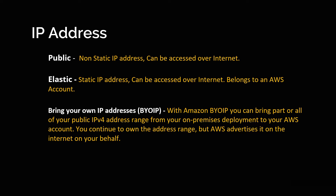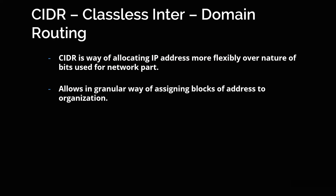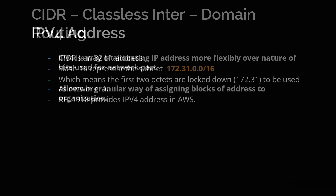Now that we have seen what the IP address types are, the next thing we are going to see is called CIDR block. CIDR stands for Classless Inter-Domain Routing. This is a way of allocating IP addresses more flexibly based on the number of bits used for the networking part. It allows you to assign blocks of addresses to your organization in a granular way. Whenever you create a VPC, you need to assign a CIDR block to the VPC or the subnet, and any resources created within the subnet will pick an IP address within the range you specify.